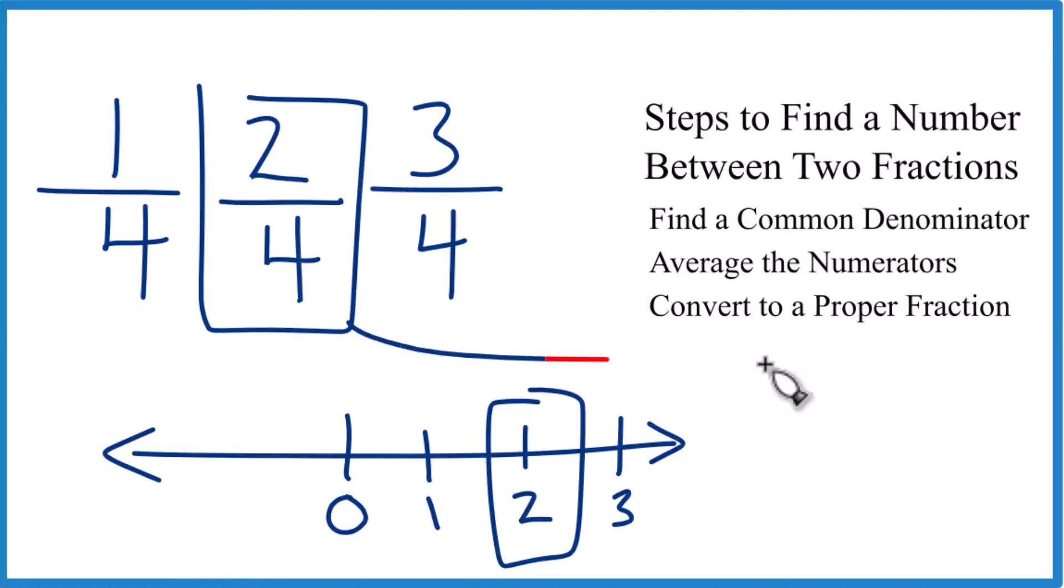And again, you could simplify this if you divide the numerator and denominator by 2. 2 divided by 2 is 1. 4 divided by 2 is 2. 1/2. So 1/2, again, is between 1/4 and 3/4.